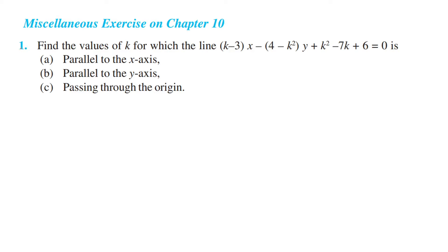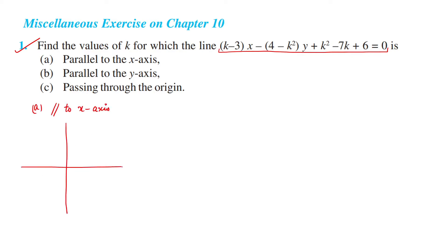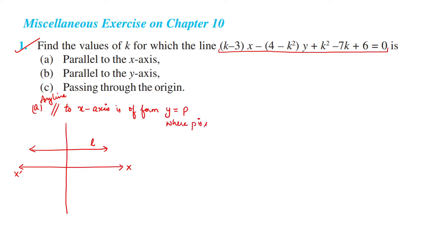Let's start. Question number 1: find the values of k for which the line is parallel to the x-axis. Now any line that is parallel to the x-axis in the Cartesian plane is of the form y = p, where p is some constant.